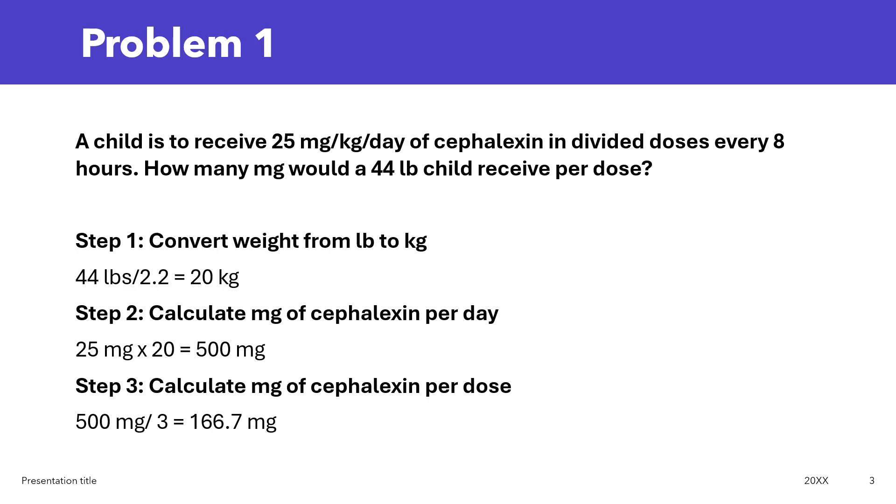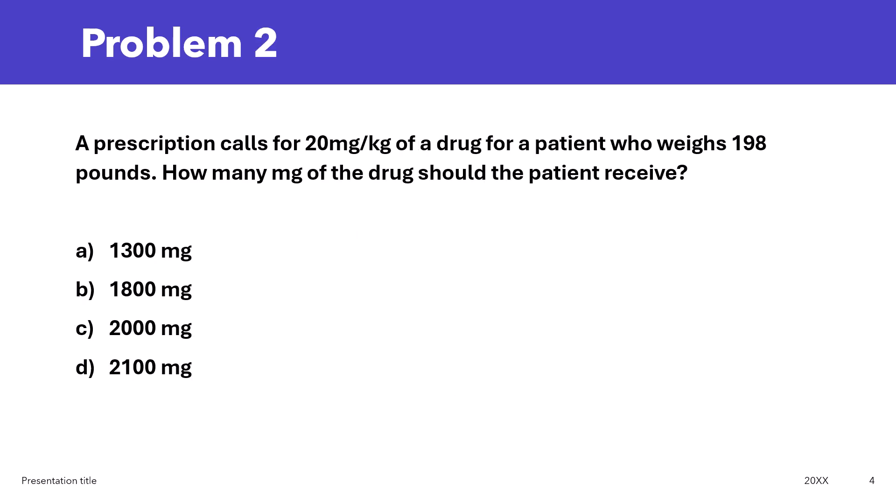So it's going to be 25 times 20, so that's 500 mg. Next, we can calculate how many mg of cefalexin per dose. We just calculated how many mg per day. Now, it's in divided doses every 8 hours, so that means 3 times a day. So if we have the mg per day and we know it's being given 3 times per day, it's going to be 500 divided by 3, and the answer will be 166.7 mg.